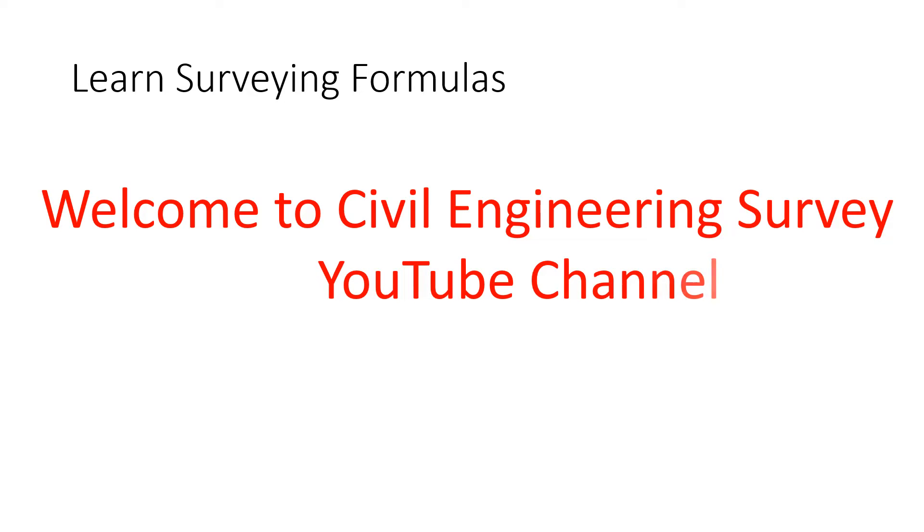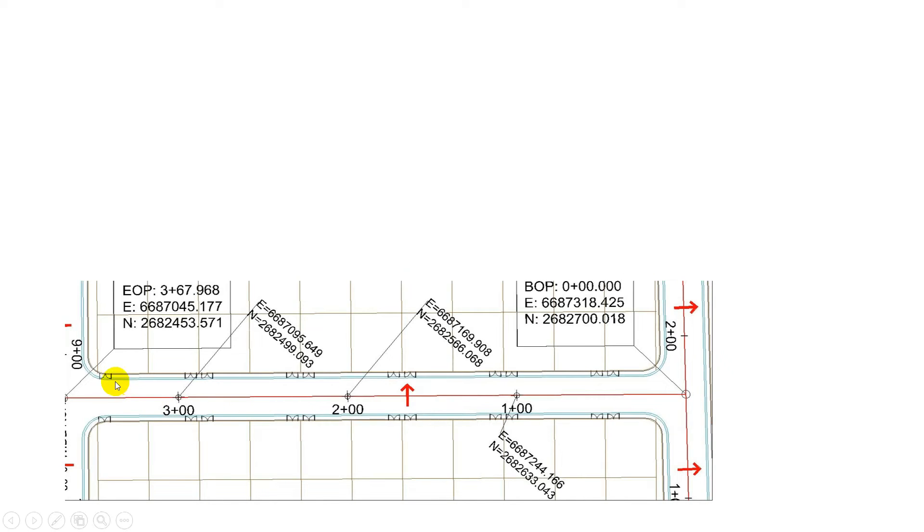Hi viewers, welcome to my channel. You are watching Civil Engineering Survey YouTube channel. Today we're going to jump to the manual calculation of coordinates - coordinate calculation on the straight path and circular path. How to calculate these coordinates. We have our calculation here, and we start at chainage 0+0 to end at 3+67.968.